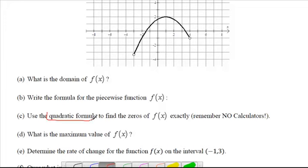Part c, use the quadratic formula to find the zeros of f exactly, so no calculator. The zeros are going to be here and here, so I can already estimate it to be negative one and a half and about three and a half.